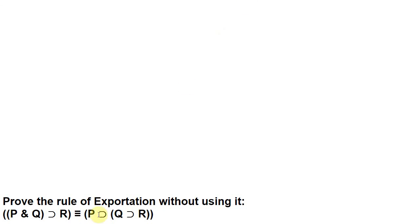So here's what the rule of exportation says: if p and q, then r is materially equivalent to if p, then if q, then r. Okay, so how can we prove this? Well, we're going to start by assuming what we have on the left side here, and trying to get what we have on the right side. And then we'll go the other way, assuming what we have on the right side, and trying to get what we have on the left.